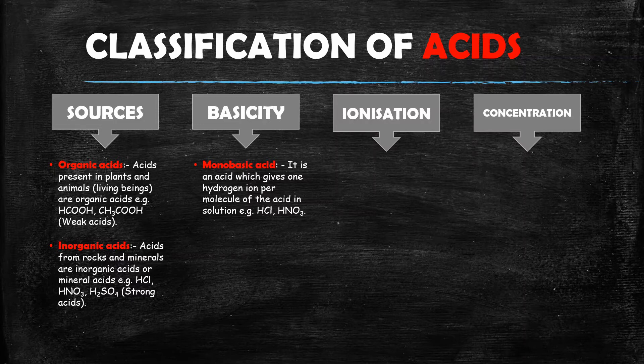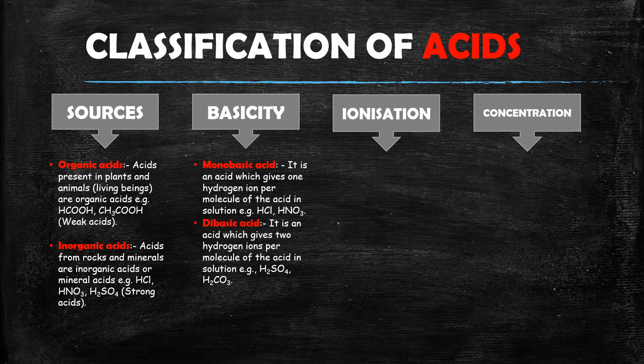For example, hydrochloric acid (HCl) and nitric acid (HNO3) can each give one H positive ion — they are monobasic acids. Dibasic acids have two hydrogen ions per molecule that can be lost. Examples include sulfuric acid (H2SO4) and carbonic acid, which can give two H positive ions.